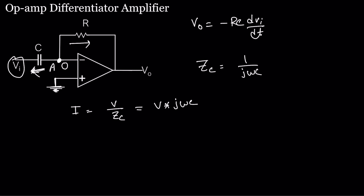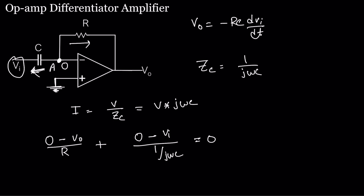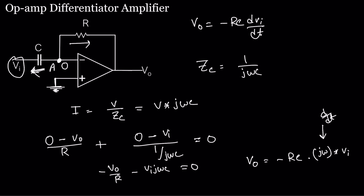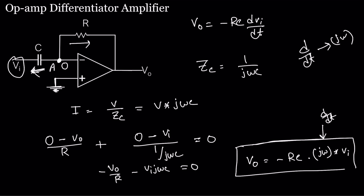Applying KCL in the frequency domain: (0 - V0)/R plus (0 - Vi)/(1/jωC) = 0. From here we get V0/R - Vi · jωC = 0, so V0 = -RC · jω · Vi. The term jω in the frequency domain corresponds to d/dt in the time domain, so both expressions are equivalent.